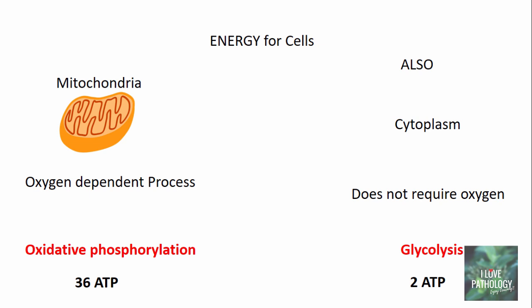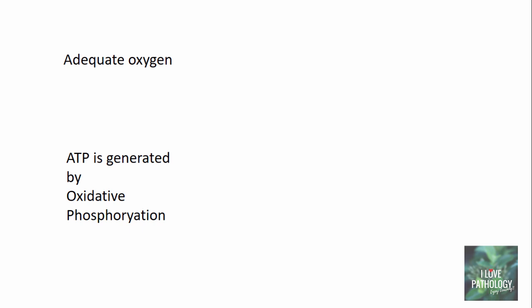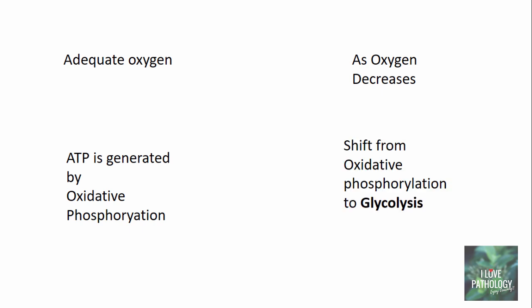When you compare these two mechanisms, it is obvious that oxidative phosphorylation is more efficient when it comes to production of energy. When adequate oxygen is present, ATP is generated by oxidative phosphorylation, whereas as oxygen levels decrease, there is a shift from oxidative phosphorylation to glycolysis. This shift is known as anaerobic glycolysis, also referred to as the Pasteur effect.